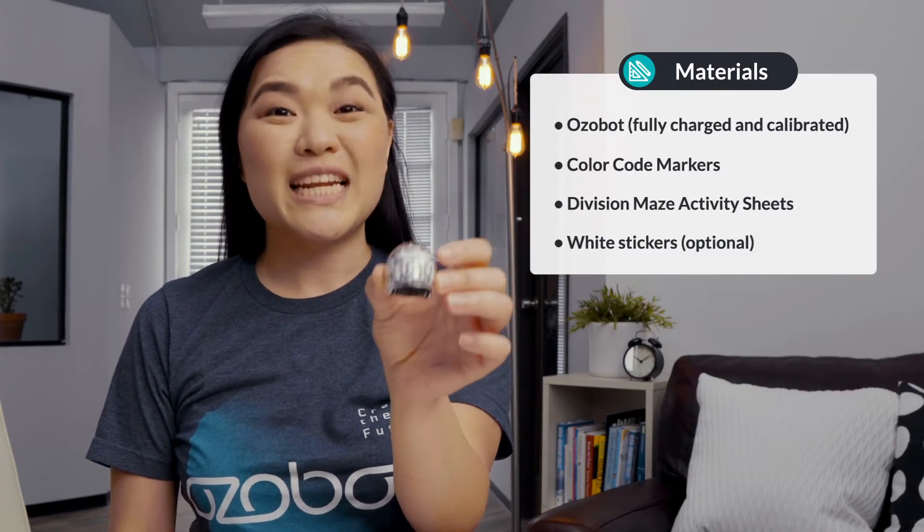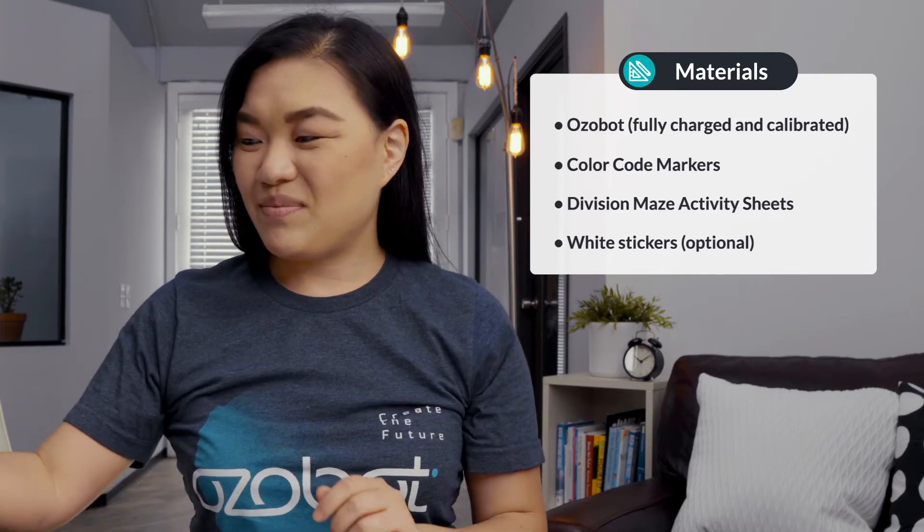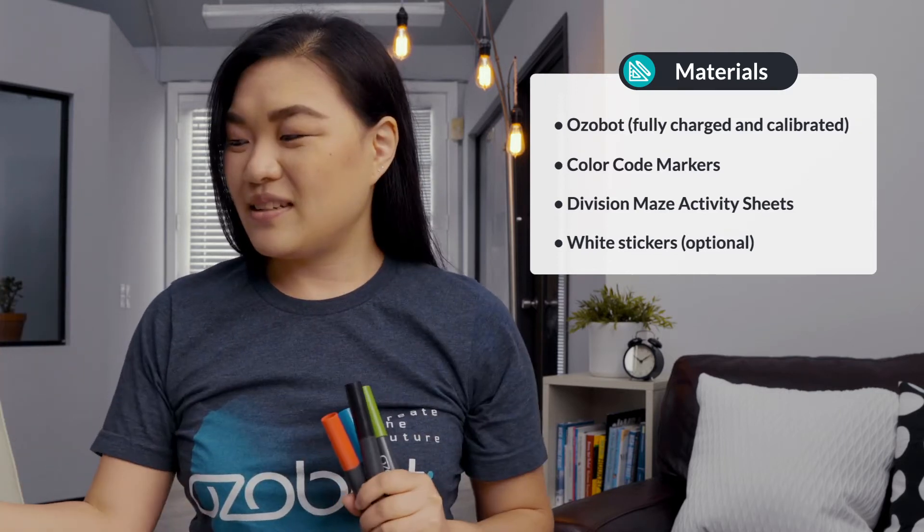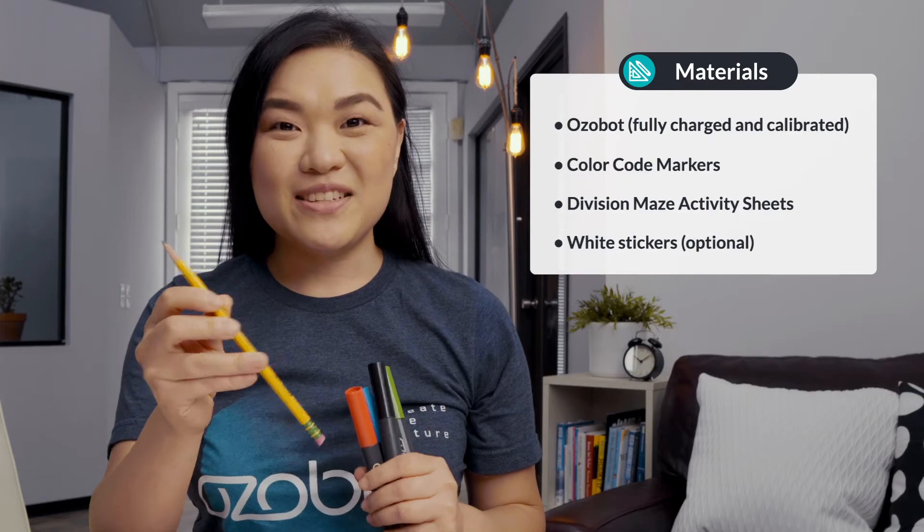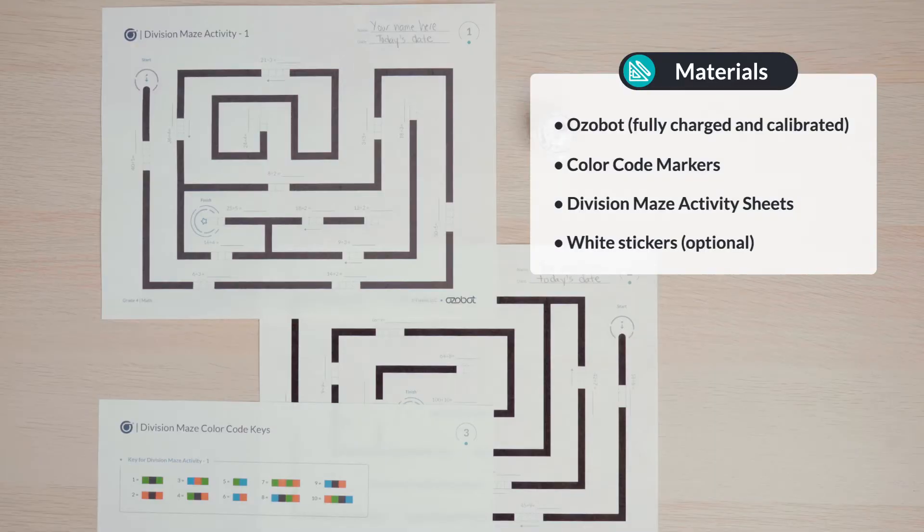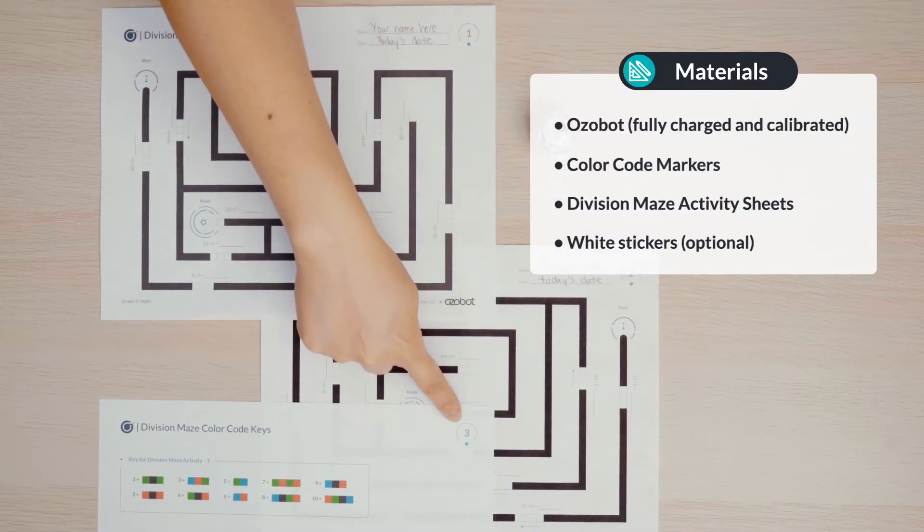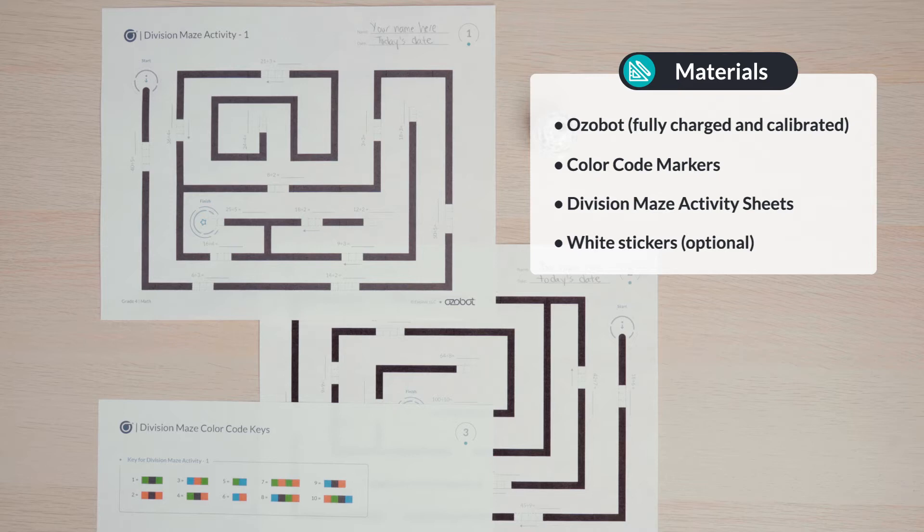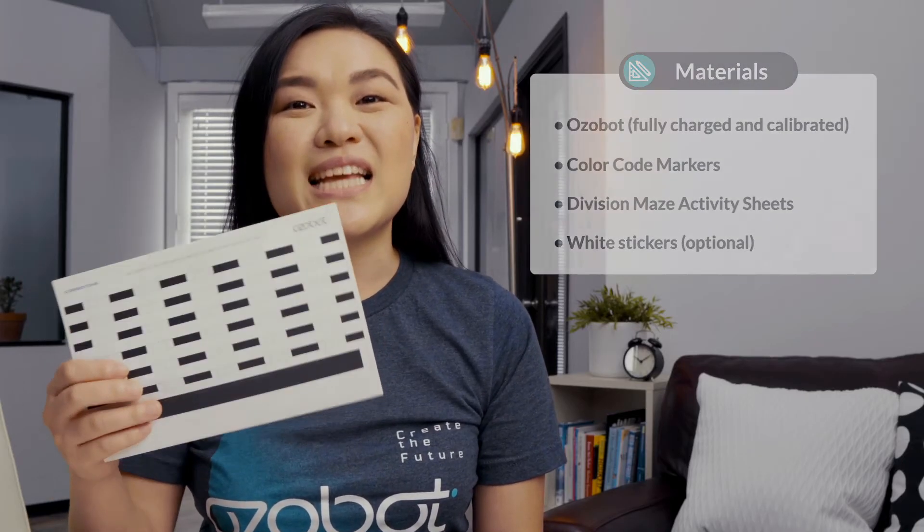For today's lesson you will need an Ozobot fully charged and calibrated, your color code markers, a pencil, your division maze activity sheets, make sure to have all three pages, and white stickers to correct any mistakes. If you don't have the Ozobot stickers you can use plain white stickers or just redraw your maze on a separate sheet of paper if you make a mistake.